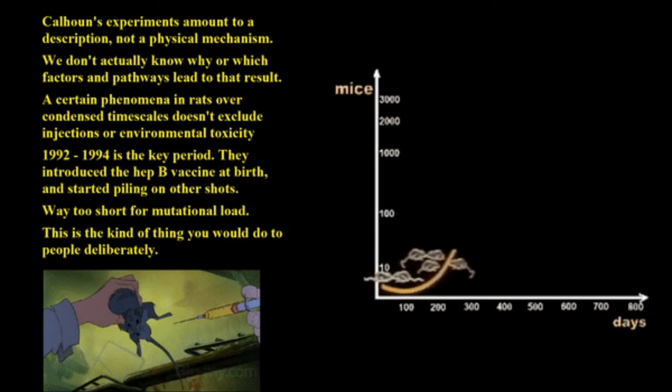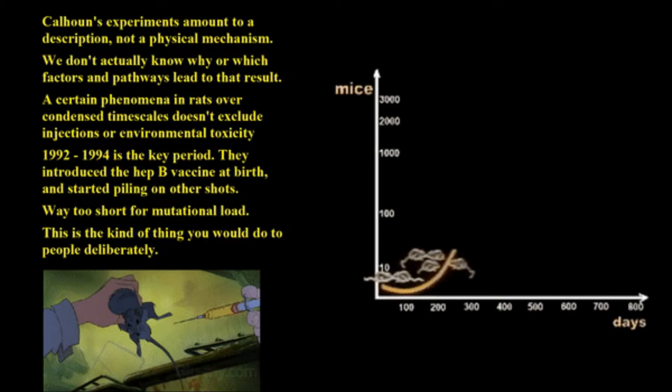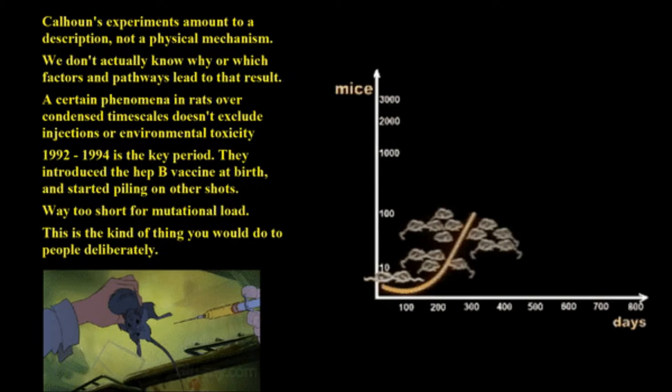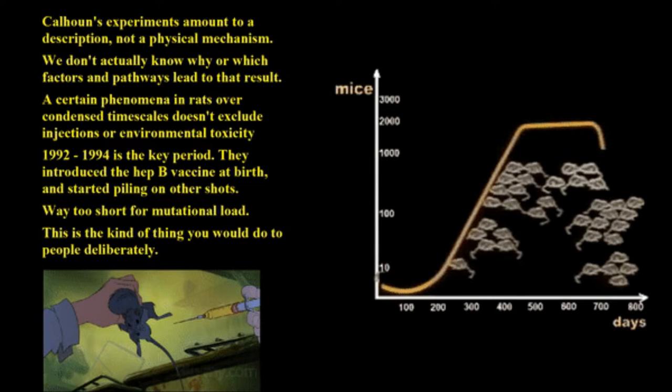He said this is the kind of thing you would do to people deliberately. The issue there is that Calhoun repeated his experiment — those were the results. He did it first with rats, then with mice, doing a total of at least 25 experiments.